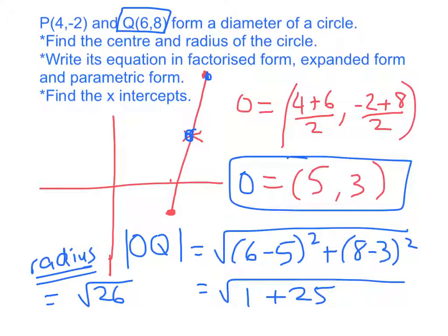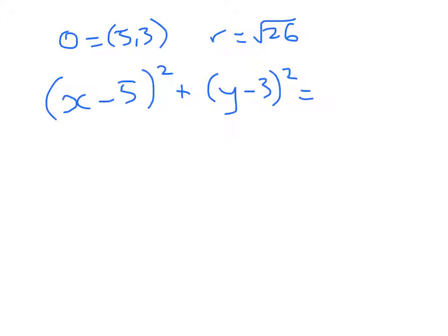Now on the next slide, we're going to write that equation in all three ways. The easiest one is going to be in factorised form because I've got the centre and I've got the radius. Right, so O equals 5, 3, r equals root 26. So we can very quickly write down the equation. x minus 5 squared plus y minus 3 squared is equal to the radius squared, which is 26. So that's factorised form.